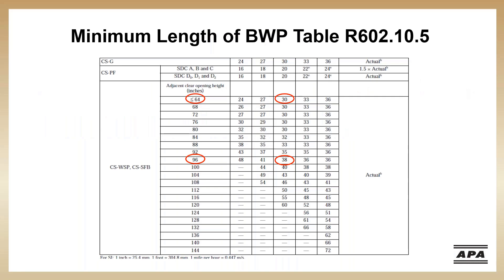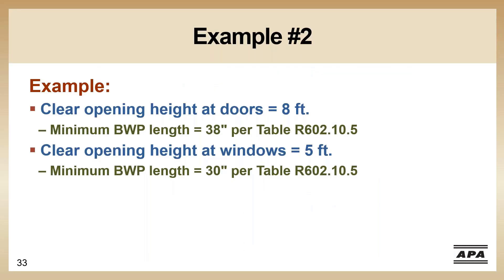With the continuously sheathed wood structural panel method, minimum lengths are determined by adjacent openings. In our case, we have a door opening of 96 inches, so we need a minimum of 38 inches to count as qualified bracing. Our windows are less than 64 inches, so we need 30 inches next to the windows to count as qualified bracing.